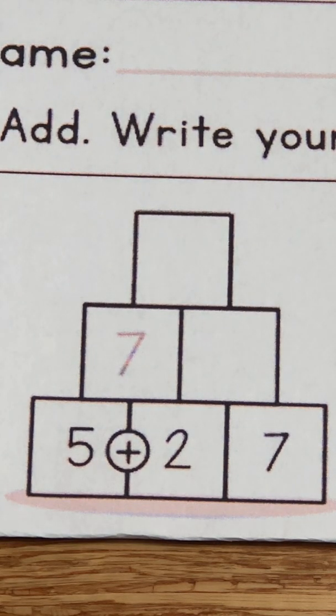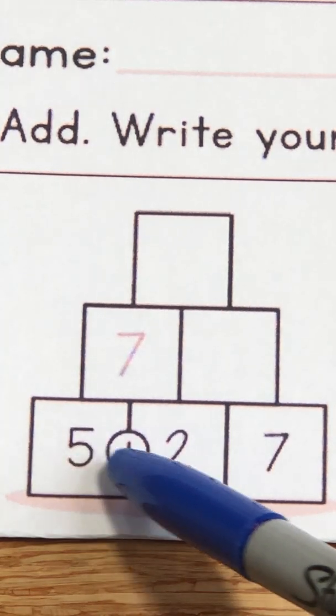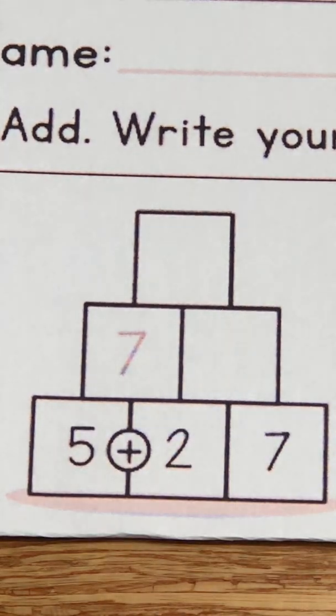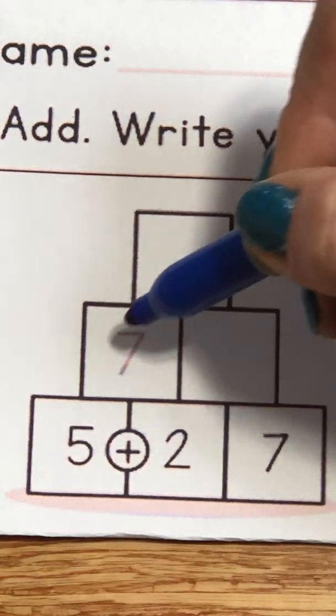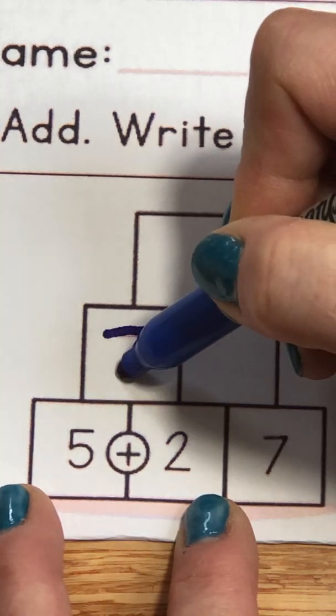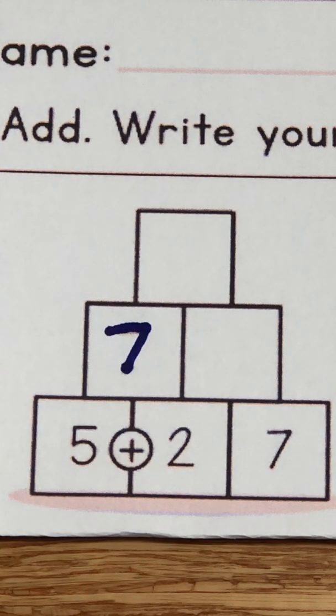You will see that there are some numbers provided for you in the bottom boxes. We call this Pyramid Addition because we are going to take the five and we're going to add it to the two. Five plus two equals seven. That answer goes there.